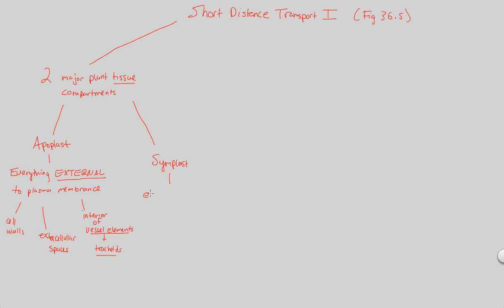The symplast is a little bit different. Simply speaking, this is considered the entire mass of anything within the cytosol — we're now inside the cell. The symplast is one continuous route, also including the interconnected plasmodesmata. Every cell next to another has these small openings allowing it to continue with the next cell's cytosol — a cytosol-to-cytosol interaction — moving cell to cell via these plasmodesmata doors.